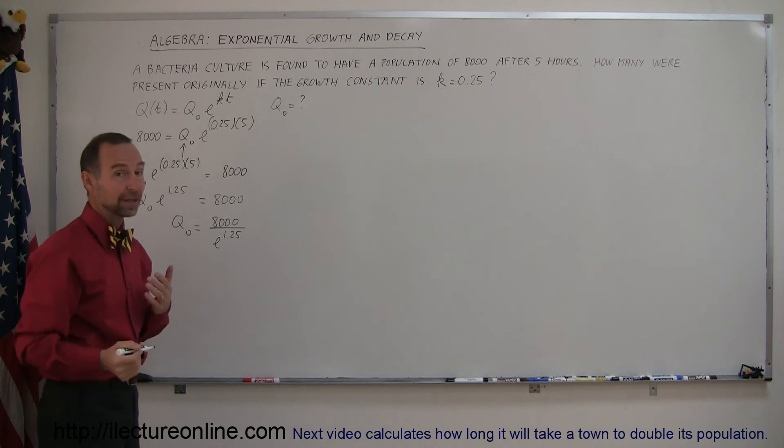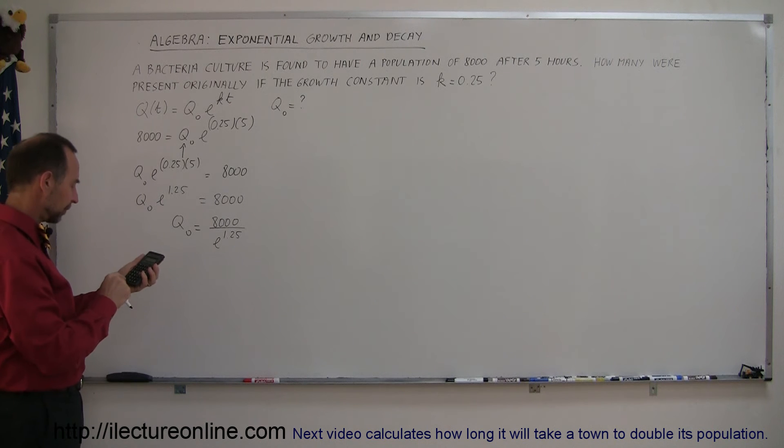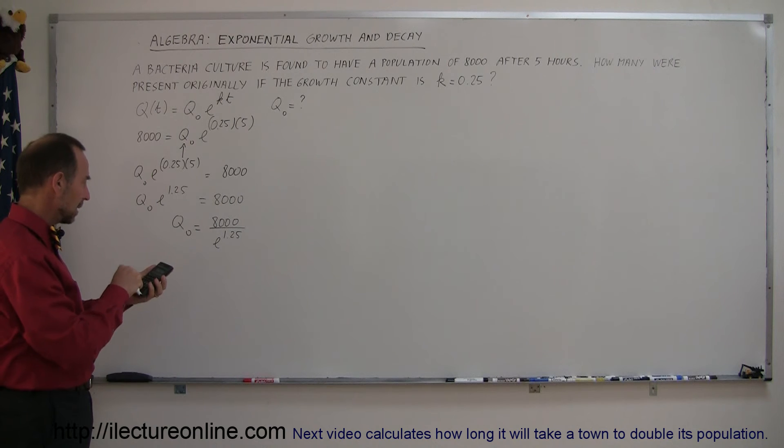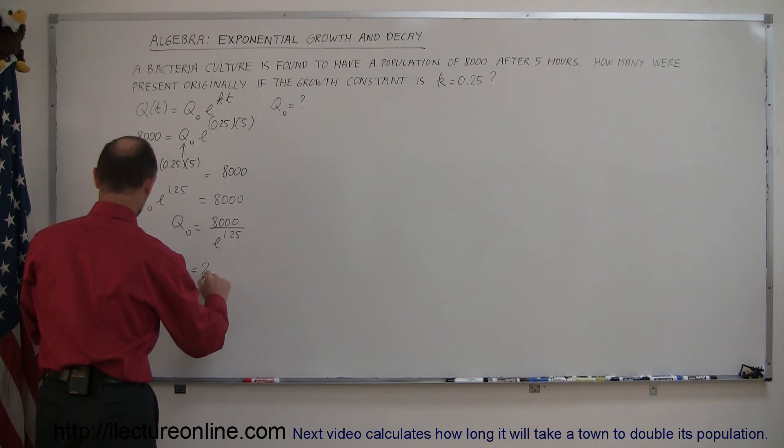And all we have to do is grab our calculator and figure out what that is. So we take 8,000 and we divide that by the quantity 1.25 raised to the exponent e equals, and we have q sub nought is equal to 2,292.